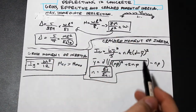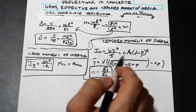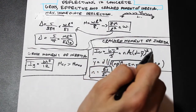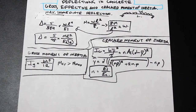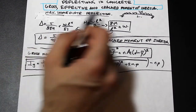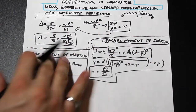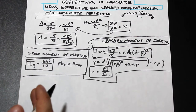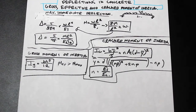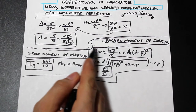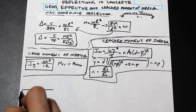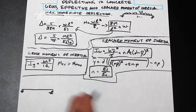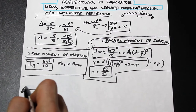These formulas are straightforward for finding the moments of inertia, but what we're mainly concerned about is why we need to consider cracked moment of inertia versus gross moment of inertia. The key idea is that the flexural rigidity of a section decreases as it cracks — so the moment of inertia decreases as we move to more and more cracked sections.